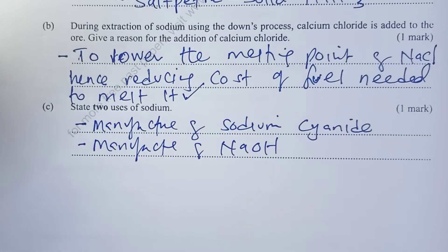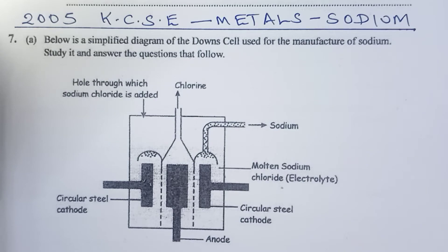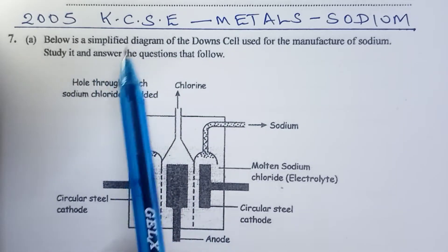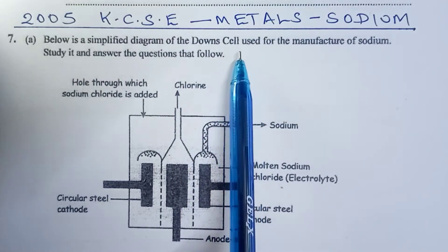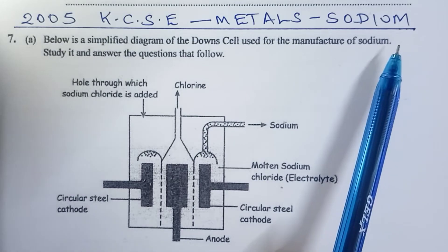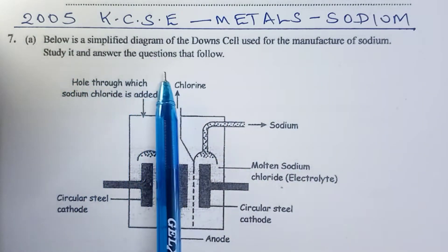We want to end this video by now looking at paper two of 2005, where sodium was tested for a whole 12 marks. For the year 2005 KCSE chemistry paper two, question part A told us that below is a simplified diagram of the Downs cell used in the manufacture of sodium — study it and answer the questions that follow.